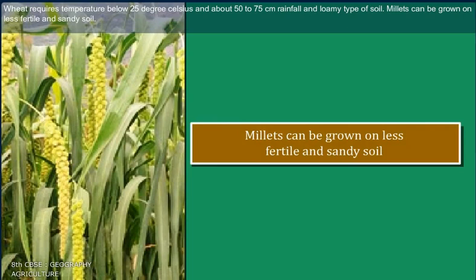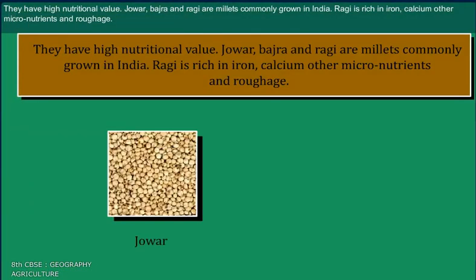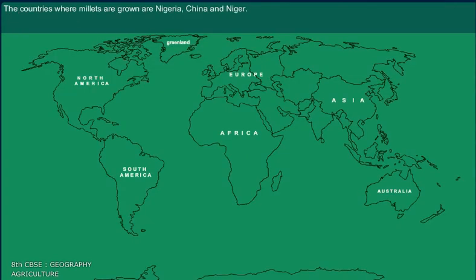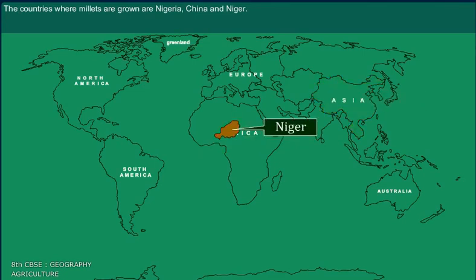Millets can be grown on less fertile and sandy soil and have high nutritional value. Jowar, bajra, and ragi are millets commonly grown in India. Ragi is rich in iron, calcium, other micronutrients, and roughage. The countries where millets are grown include Nigeria, China, and Niger.